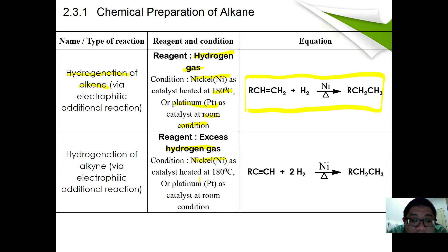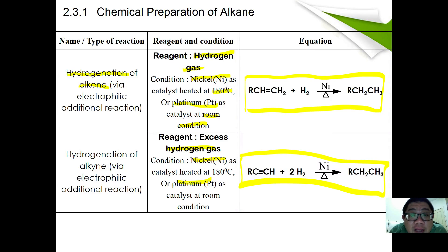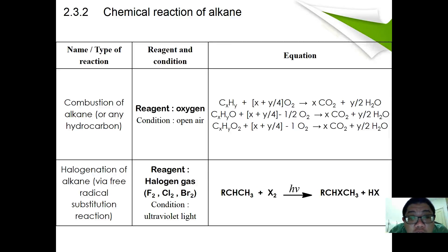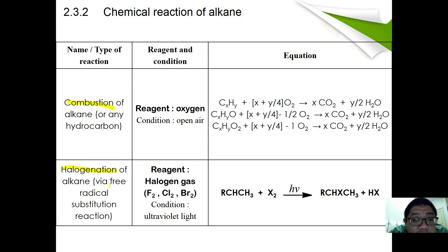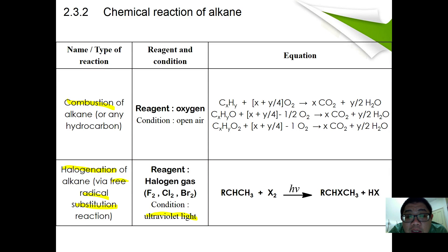Those are the two methods of how we prepare an alkane. For the chemical reactions of alkanes, there are two: combustion and halogenation. Halogenation is a free radical substitution reaction, with reagents F2, Cl2, and Br2 under the condition of ultraviolet light. For combustion, all reactions eventually form carbon dioxide and water. For halogenation, you form a haloalkane and HX is substituted.